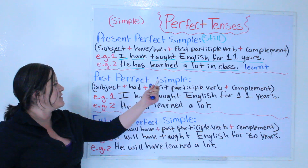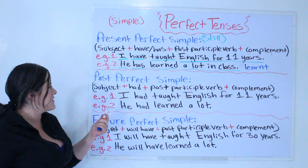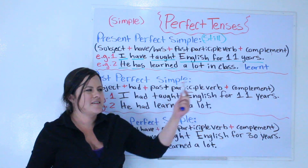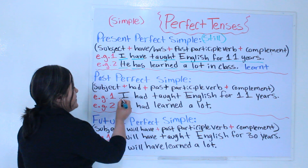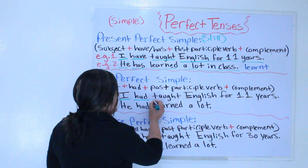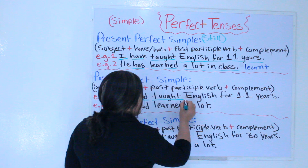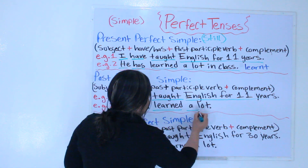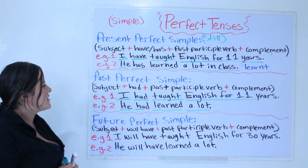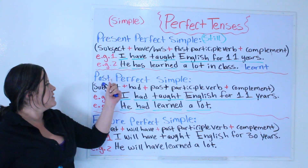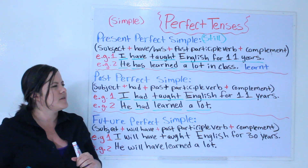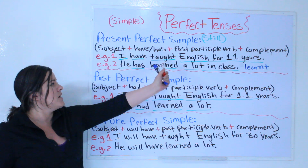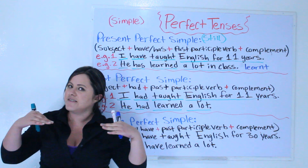The next one is past perfect simple. The past perfect simple is: subject, had, past participle verb taught, complement — English for 11 years. For example: he had learned a lot. Now, what is the difference between the present perfect simple and the past perfect simple? With the present perfect, you still do it — 'I have taught English for 11 years and I still do it today.'